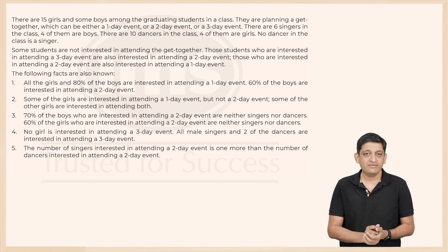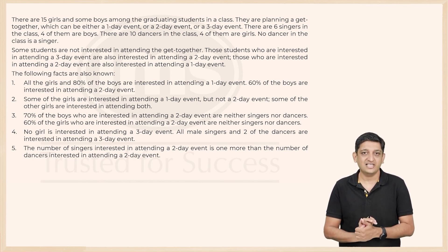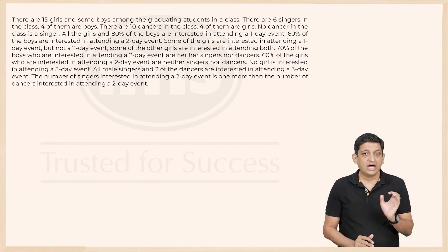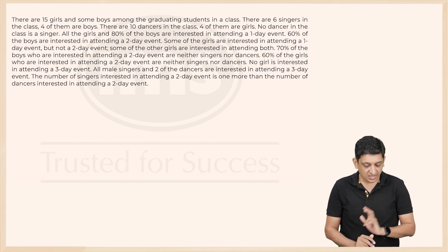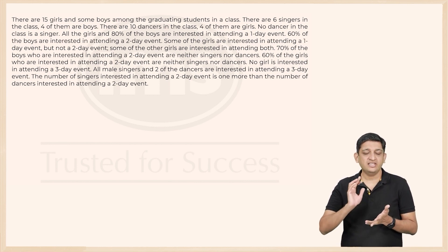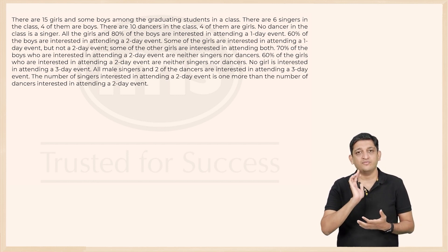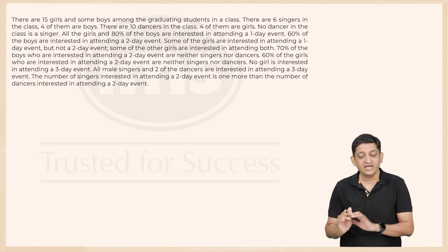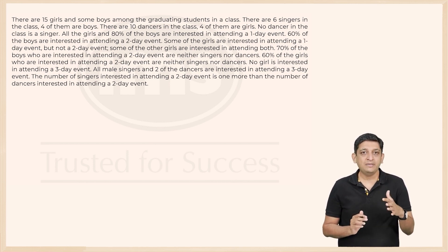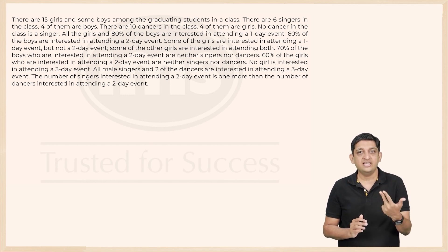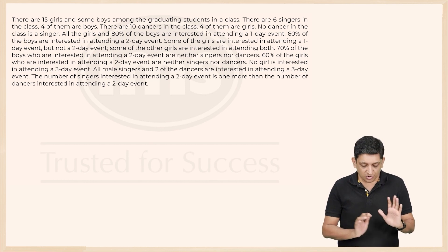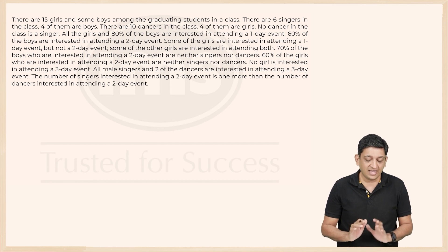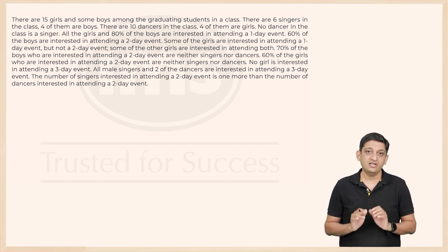We are going to look at how to solve this particular set. The information we have involves two things: the number of boys and girls who sing or dance, and how many people are interested in attending for day one, day two, day three, or not at all. Because there are two different things going on, we will use two different tables for this set.